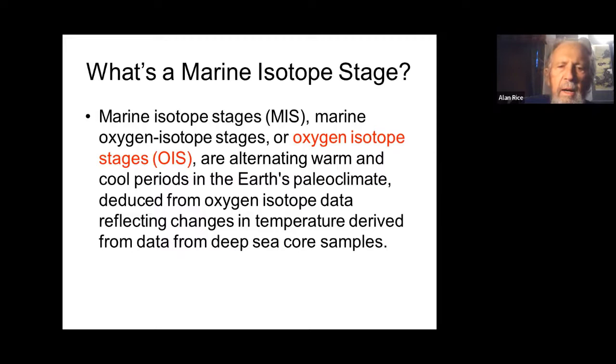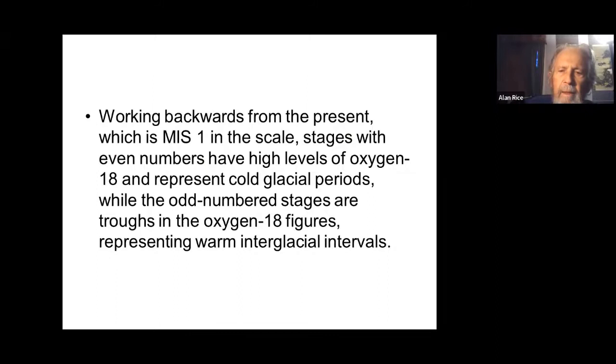Marine Isotope Stage, or Marine Oxygen Isotope Stage, are alternating warm and cool periods in the Earth's paleoclimate, deduced from oxygen isotope data reflecting changes in temperature derived from deep sea floor samples. Stages with high levels of oxygen-18 represented cold ice glacial periods, while odd-numbered stages with low values of oxygen-18 represent warm interglacial intervals, meaning there's no glaciers.